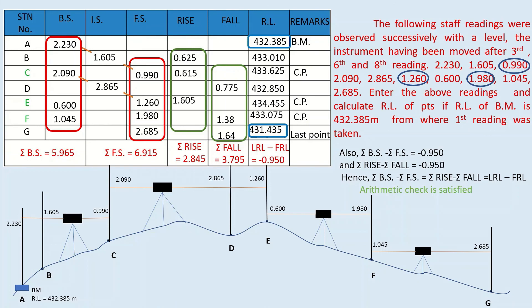It is to be noted here that these checks will not eliminate observational error that could have occurred in the field. Rise and fall method is actually better than HA method as it provides 3 arithmetic checks and calculation errors in intermediate station can also be accounted. Thank you.